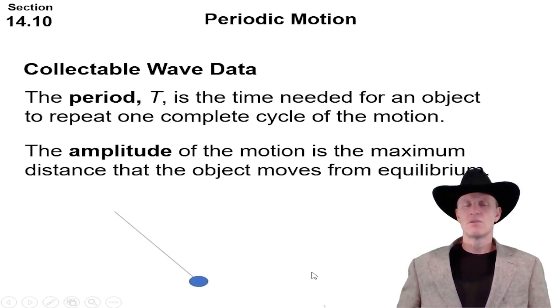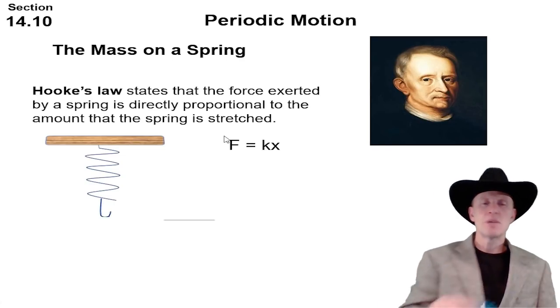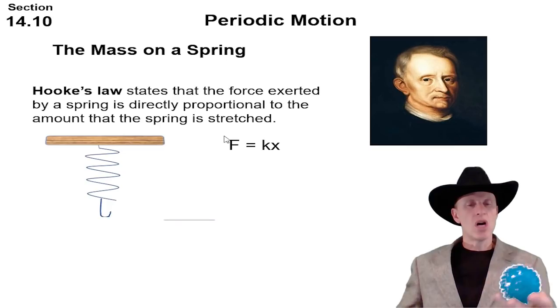Hooke's Law states that a force exerted by a spring is directly proportional to the amount that it is stretched. So if I put an object like this ball on that spring, it'll pull it down to the point where it stops and balances again.